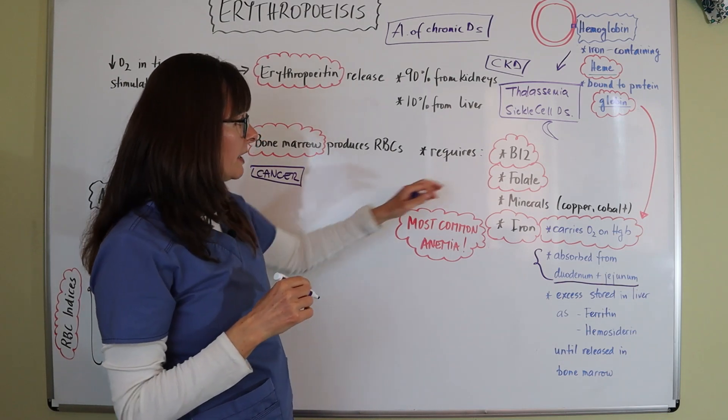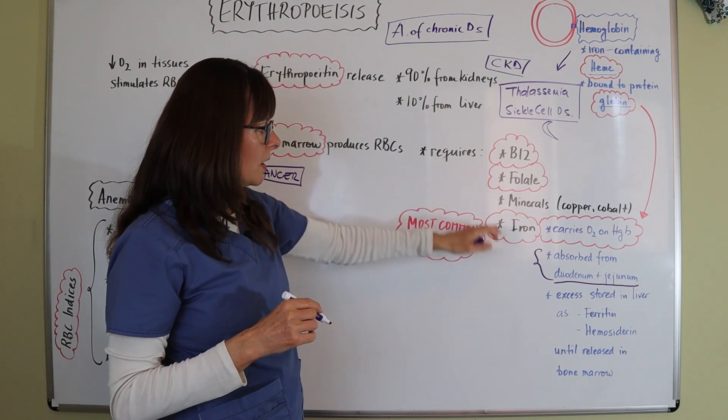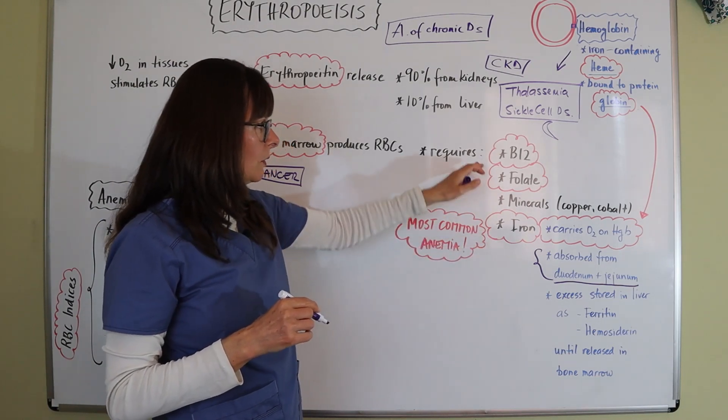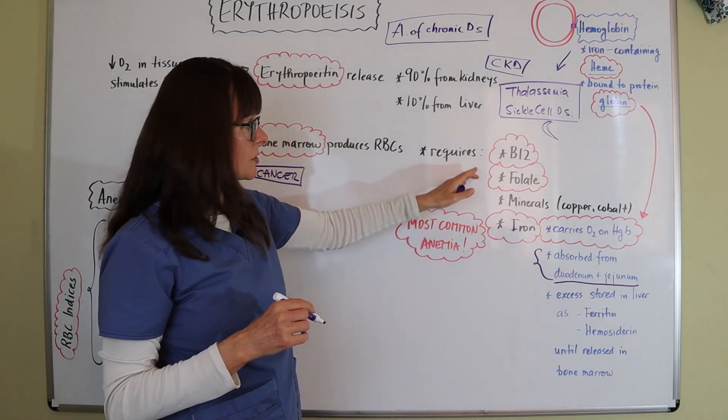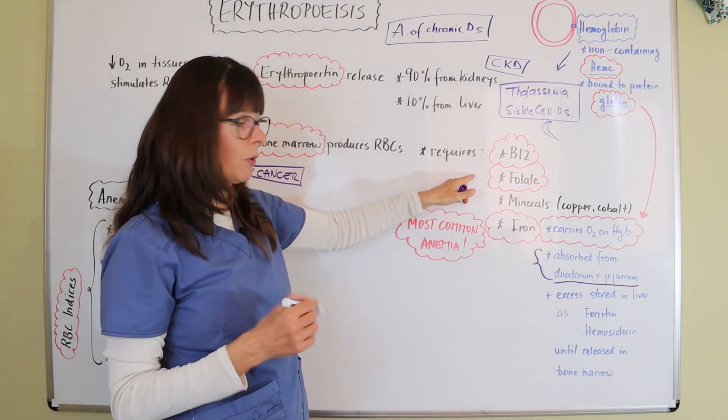And then when we have any of these deficiencies, so deficiency in vitamin B12 or folate or iron, then we can have deficiencies there. So B12 deficiency is also called pernicious anemia, folate deficiency anemia.